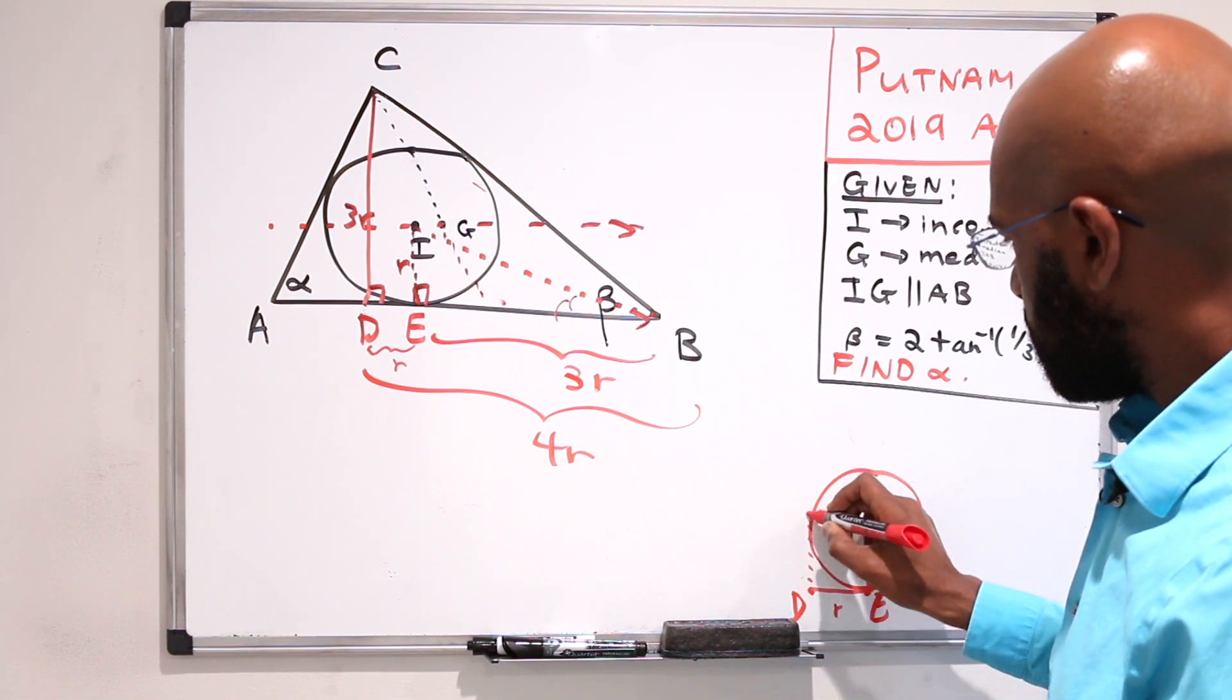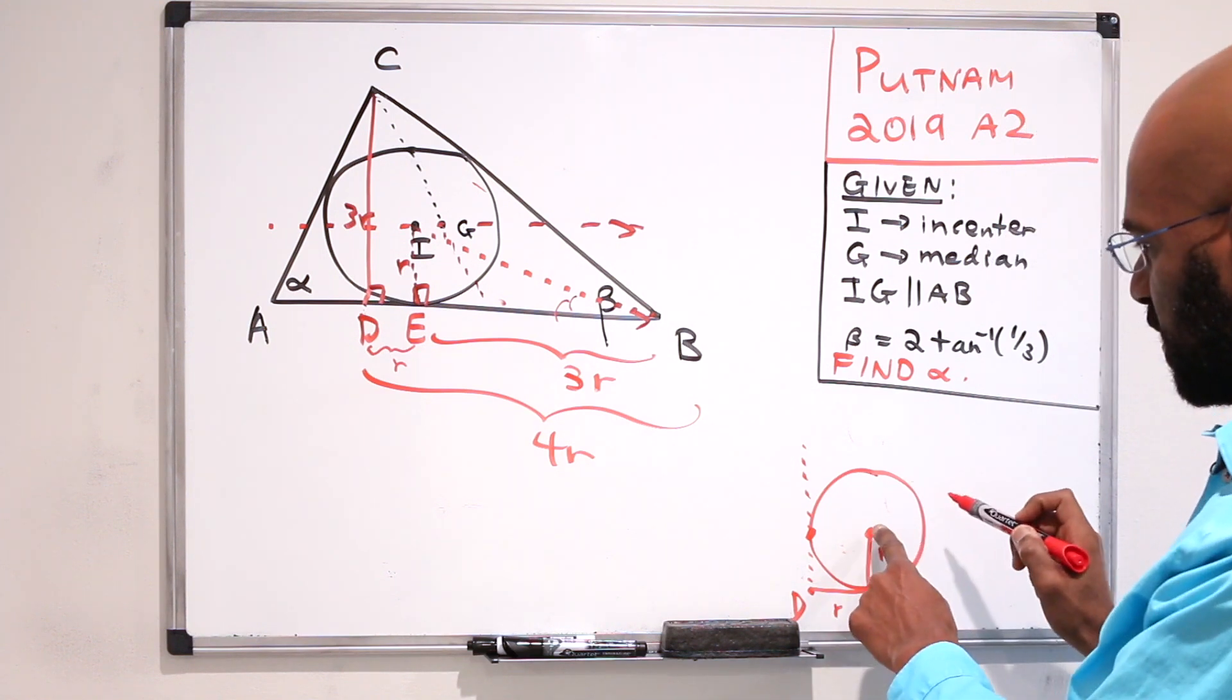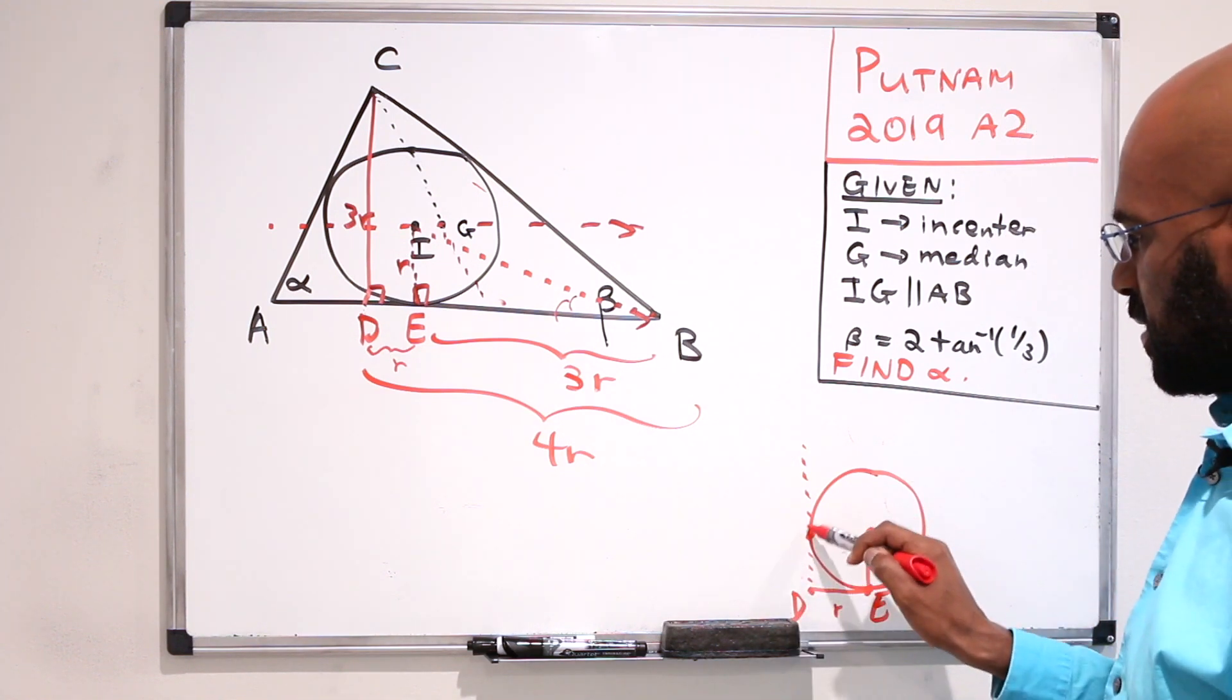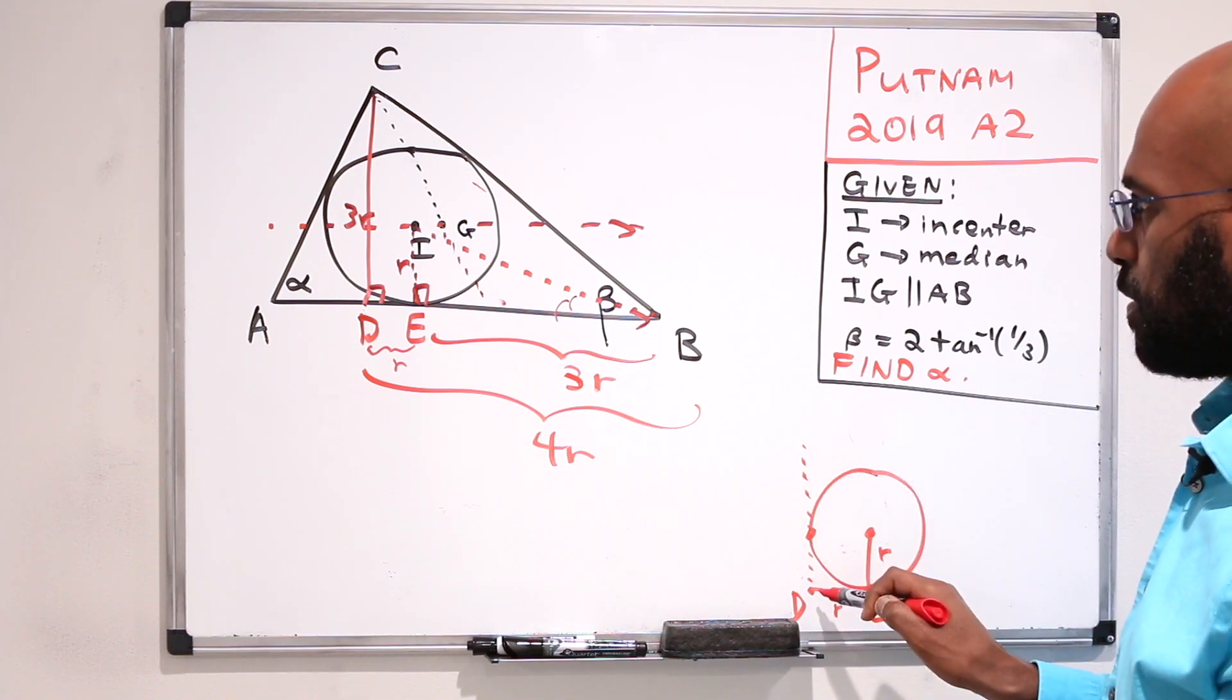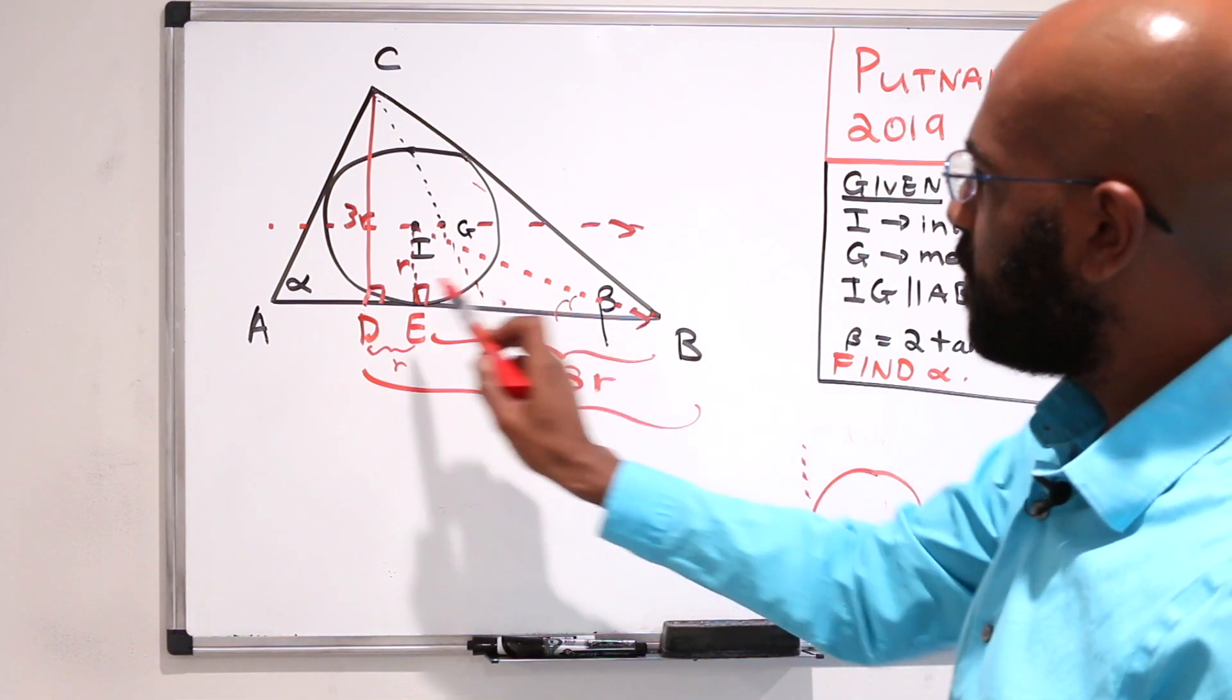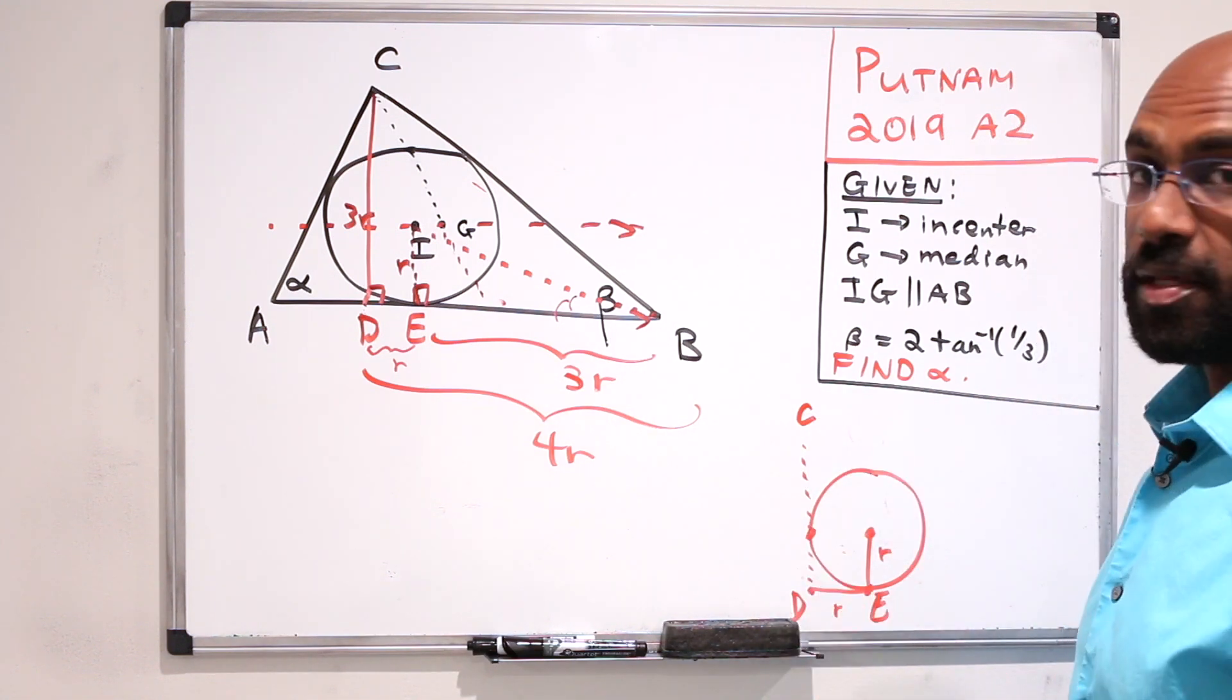But that actually means that this point here, because this distance R from the center, is actually tangent to this line segment.